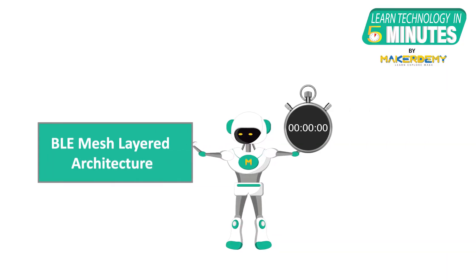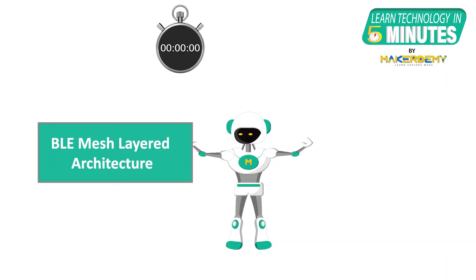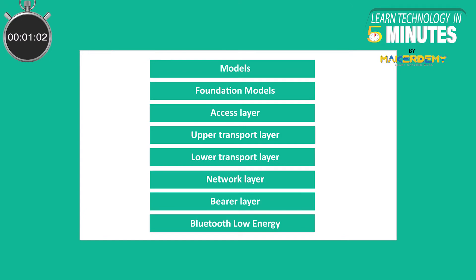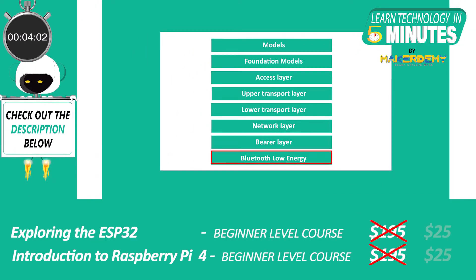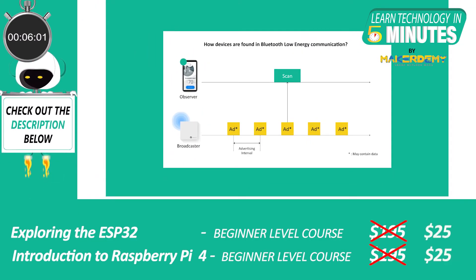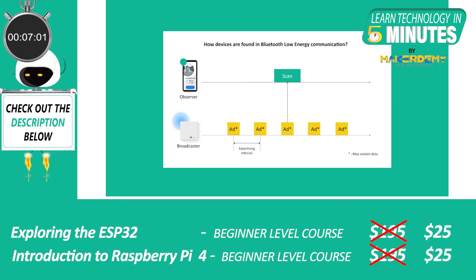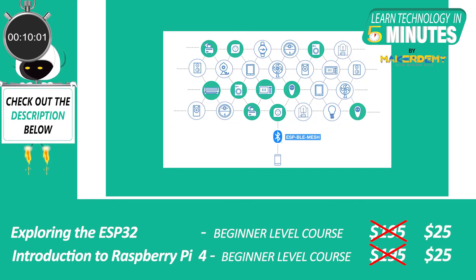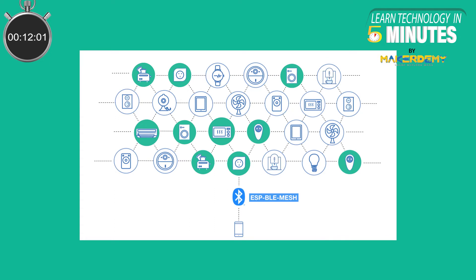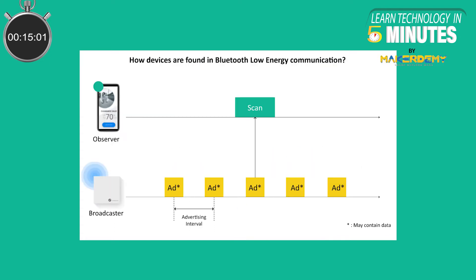In this video, we will learn about the different layers in the BLE Mesh stack. Bluetooth Mesh builds on top of Bluetooth Low Energy. It specifically utilizes the advertising state of BLE devices. Devices within a Bluetooth Mesh network do not connect to each other like traditional BLE devices do. Rather, they use the advertising and scanning states to relay messages to each other.